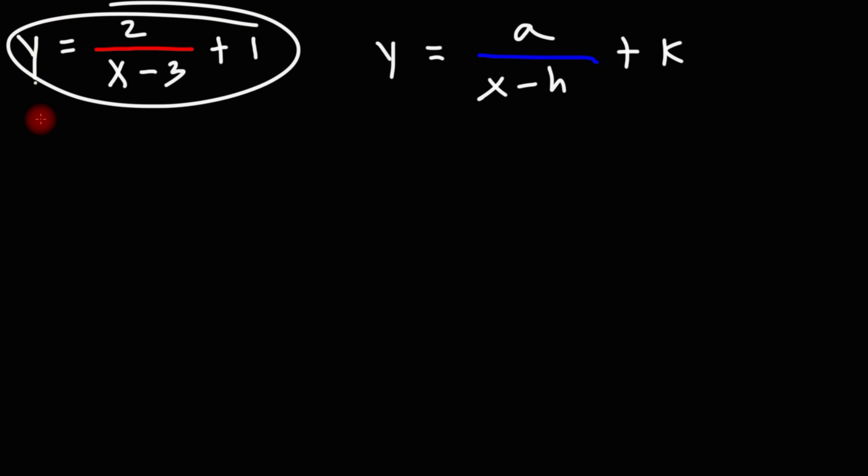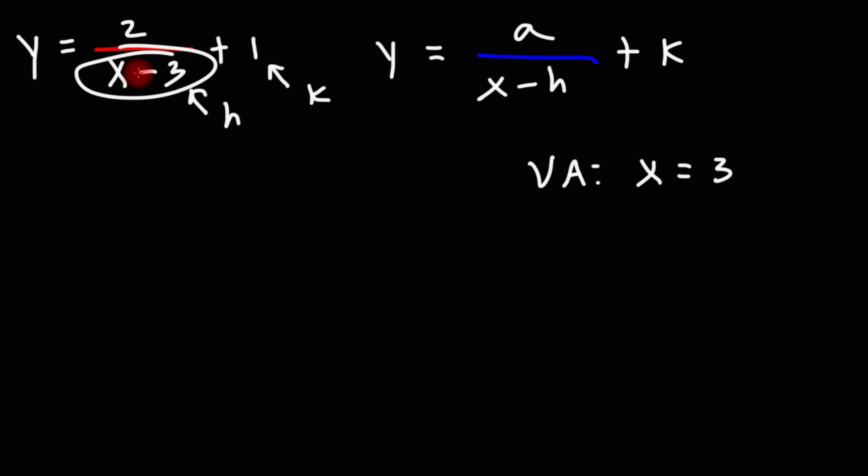So let's focus on this particular reciprocal function. We can see that h is 3, k is 1. So the vertical asymptote, which is x equals h, is going to be x equals 3. If you set x minus 3 equal to 0 and solve for x, you'll get x equals 3. For the horizontal asymptote, it's simply y equals whatever number we see here. So in this case, it's going to be y equals 1.